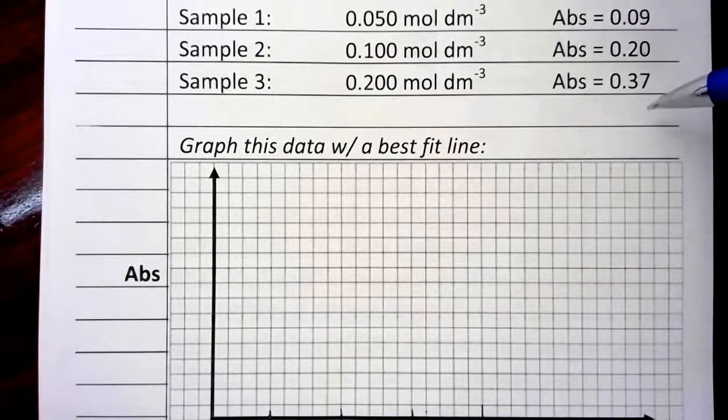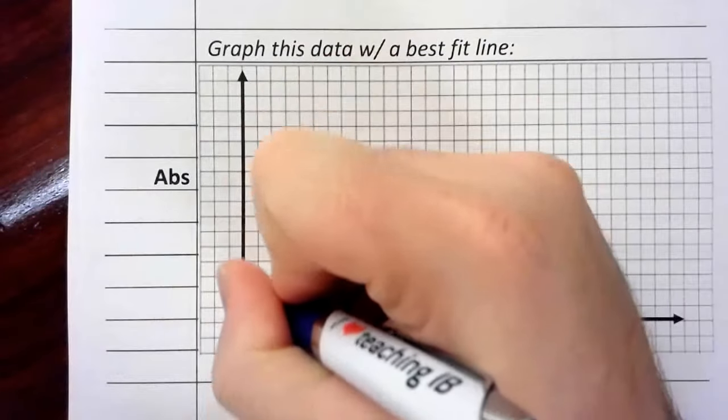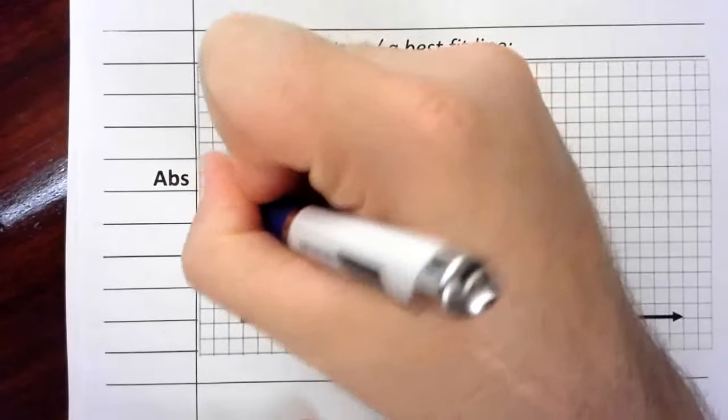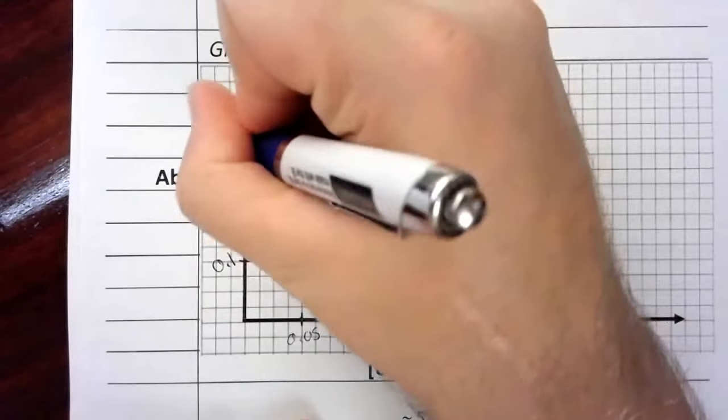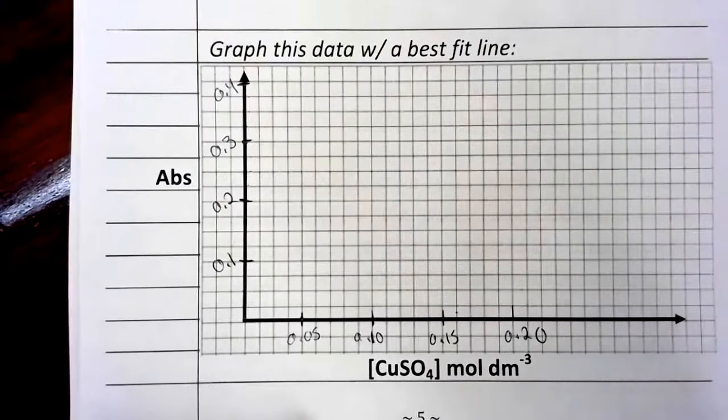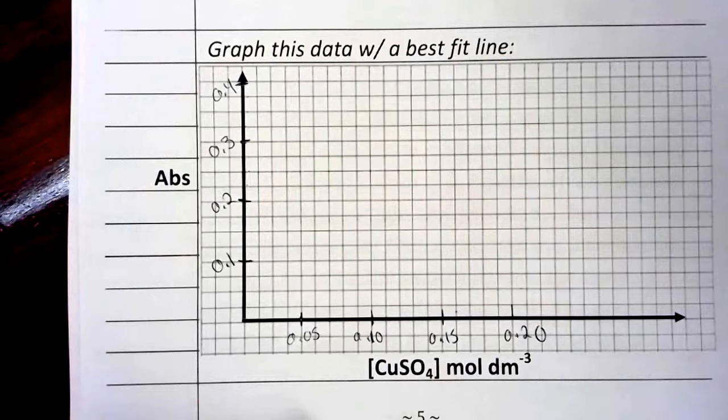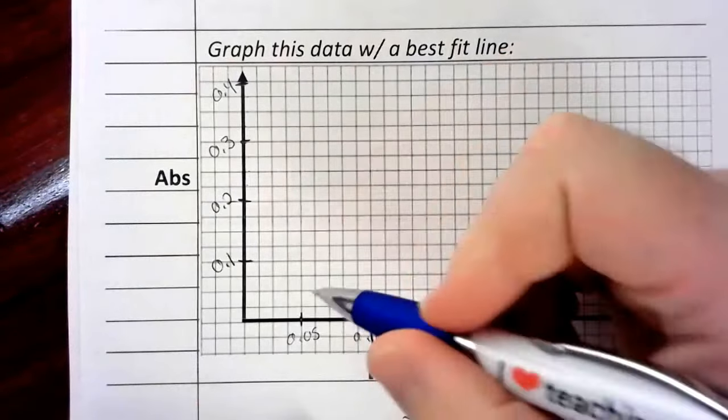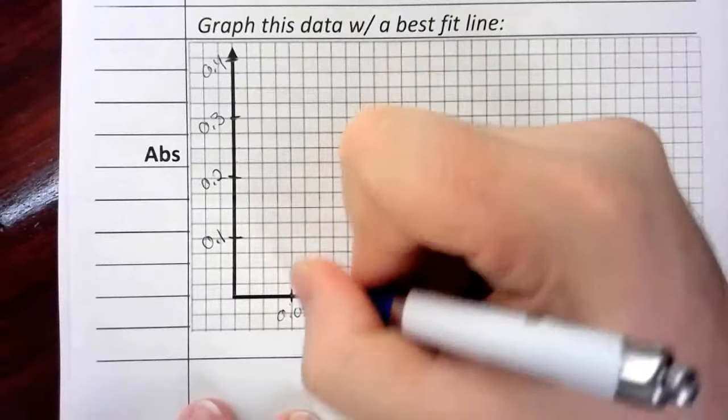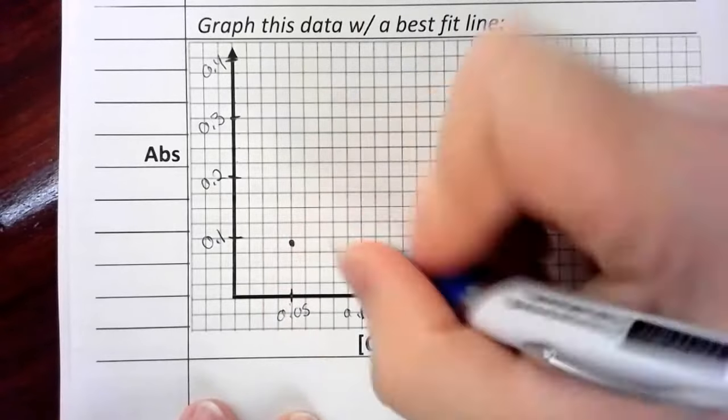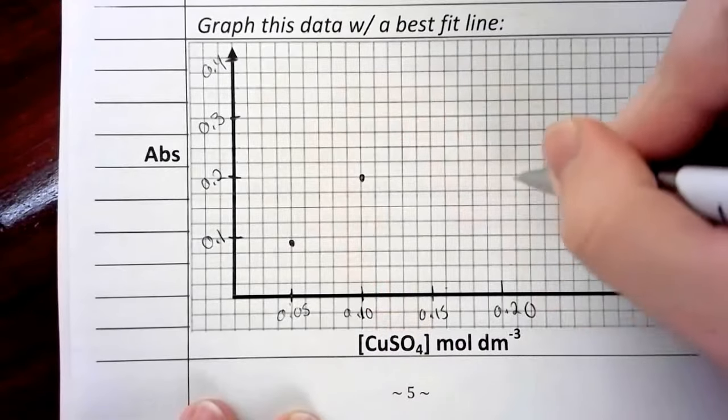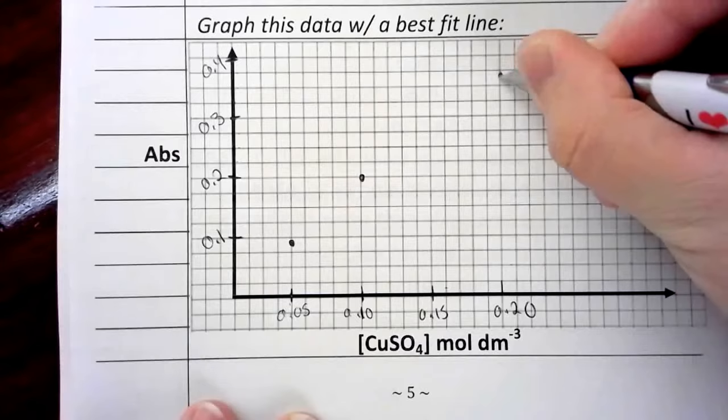Now, I'm assuming that you all learned how to size graphs correctly in math class. But notice that I'm using as much real estate as possible on this graph, so I can get a more clear graph out of this. And then when I graph this, the concentration of 0.05 gave me an absorbance of 0.09. So, first data points. 0.1 and 0.2 gives me my second data points. And my third data point at 0.2 and 0.37 would look something like this right here.